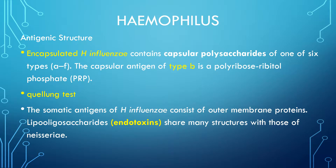Haemophilus influenzae contains capsular polysaccharides of one of six types from A to F. The capsular antigen of type B is polyribitol phosphate or PRP, and it will be positive to a capsule swelling test with a specific antiserum — just like the Quellung test for pneumococci. Most H. influenzae organisms in the normal flora of the upper respiratory tract are not encapsulated. The somatic antigens consist of outer membrane proteins.